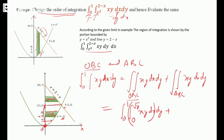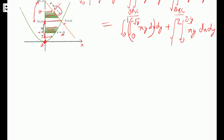Similarly, for the second region ABC, the limit of X varies from 0 to (2 minus y), and Y varies from 1 to 2, written as xy dx dy. Now evaluating the limits: from 0 to 1, when we take the integration with respect to X treating Y as constant, we write Y·x²/2 evaluated from 0 to √y, dy, and similarly for the second part.